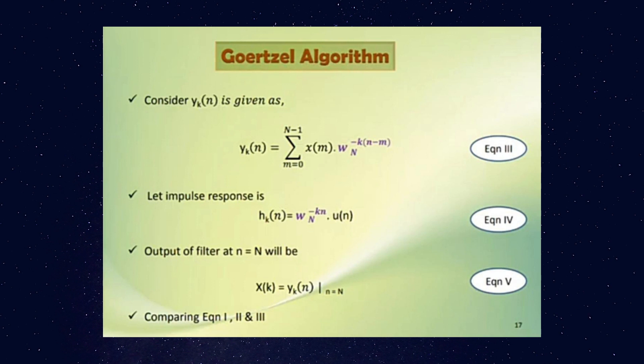The output of this filter at n equals N will be X(k) equals yₖ(n) at n equals N. Now let us compare these three equations.